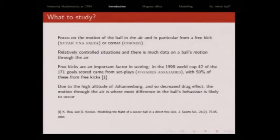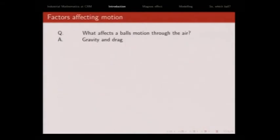Once we know the ball choice can make a difference, what are we going to look at? Where's the choice of ball going to make the biggest difference? It's going to make the biggest difference when the ball is moving through the air, because Johannesburg is 2,000 meters above sea level. The air is a lot less dense. Also, a good thing about looking at the ball motion through the air is there's a lot of data on it, particularly from free kicks and corners. Free kicks are an important factor in scoring. From the 1998 World Cup, 42 of the 170 goals came from set pieces, and 50% of these were free kicks. In Johannesburg, there's decreased drag because the air density is much lower. The ball's motion in the air were most affected by altitude. That's what we focused on.